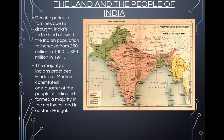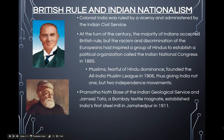The majority of Indians practiced Hinduism. Muslims made up one quarter of the people of India and formed a majority in the northwest and eastern Bengal. Colonial India was ruled by a viceroy and administered by the Indian Civil Service. The few thousand members of the Civil Service manipulated the introduction of technology into India to protect the Indian people from the dangers of industrialization, prevent the development of radical politics, and maximize the benefits to Britain and to themselves.